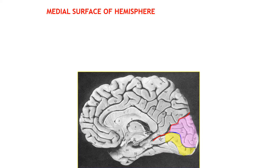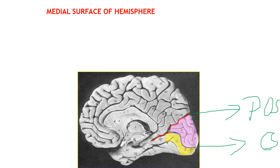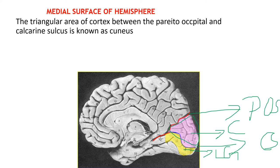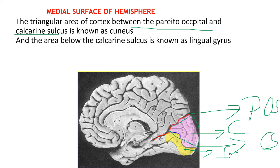On this surface, we have two important sulci: the parieto-occipital sulcus and the calcarine sulcus. The triangular area in between these two sulci is called the cuneus. Below the cuneus — shown here in yellow — is the lingual gyrus. So the area between the parieto-occipital and calcarine sulcus is the cuneus, and the area below the calcarine sulcus is the lingual gyrus.